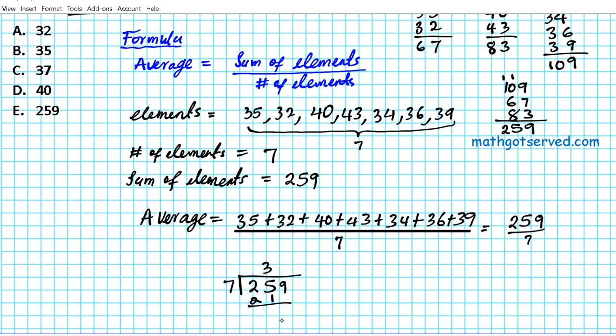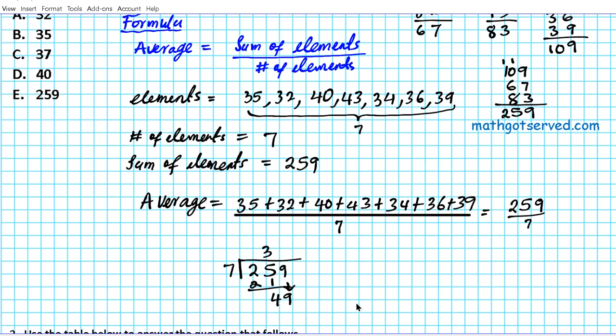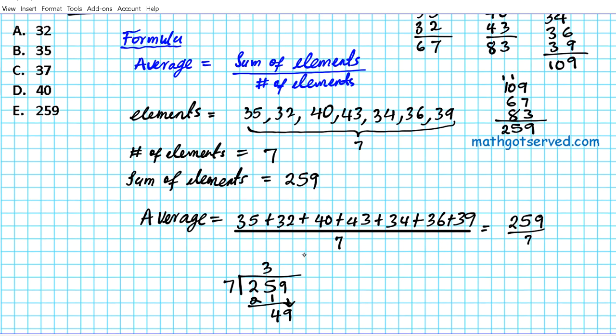And then seven goes into 49 seven times, seven times seven is 49. And then when you subtract you get a zero. So 259 divided by seven is 37.